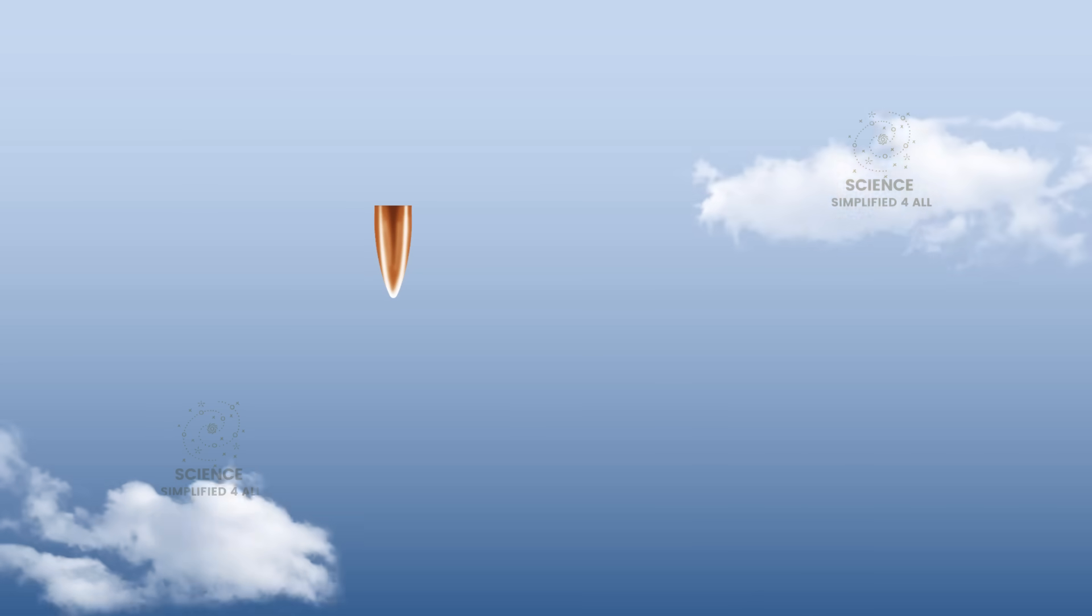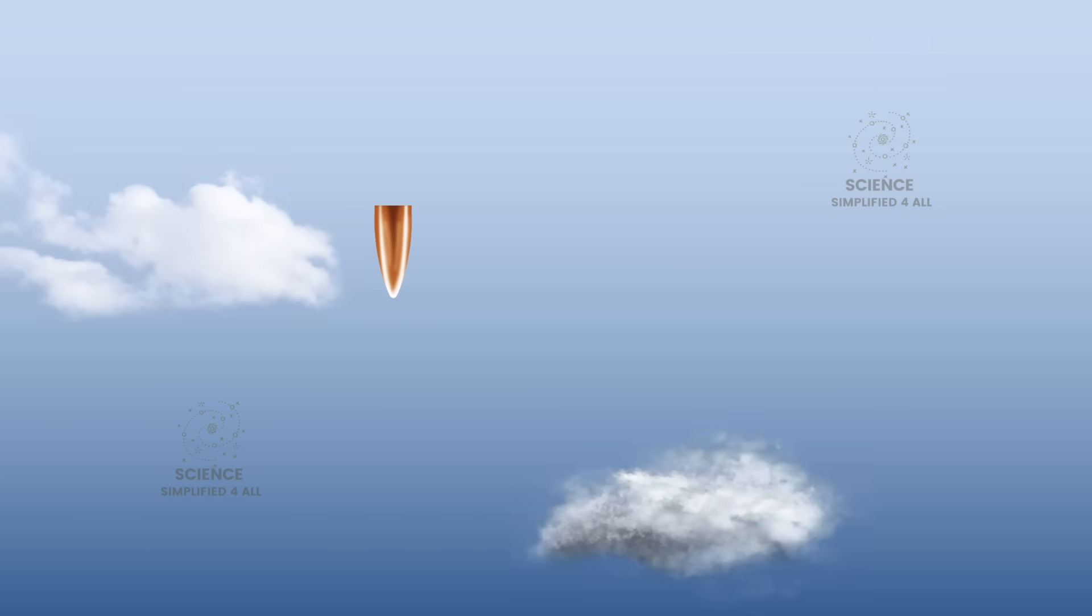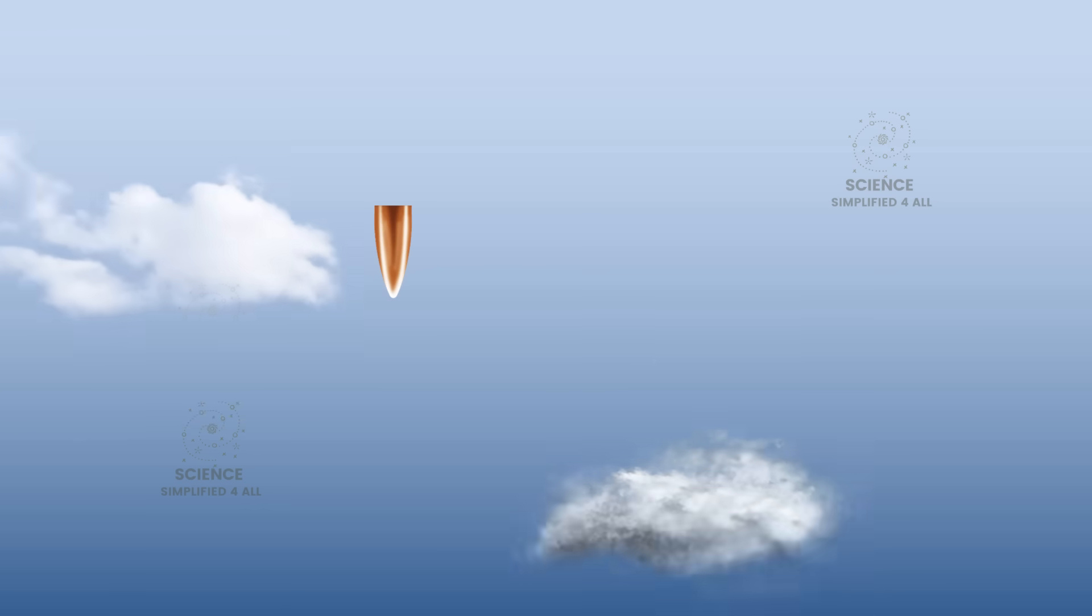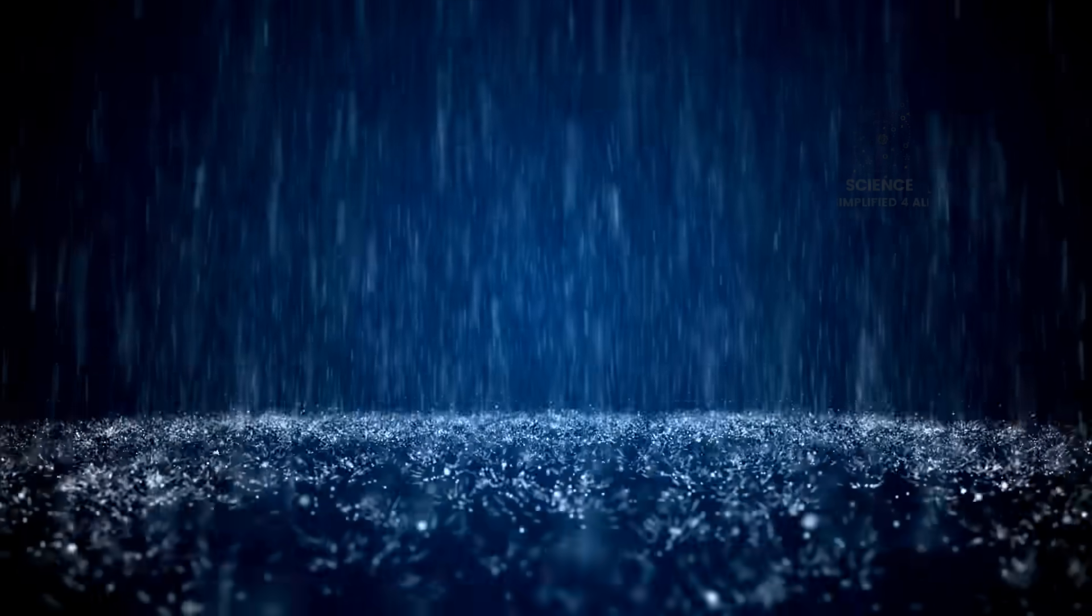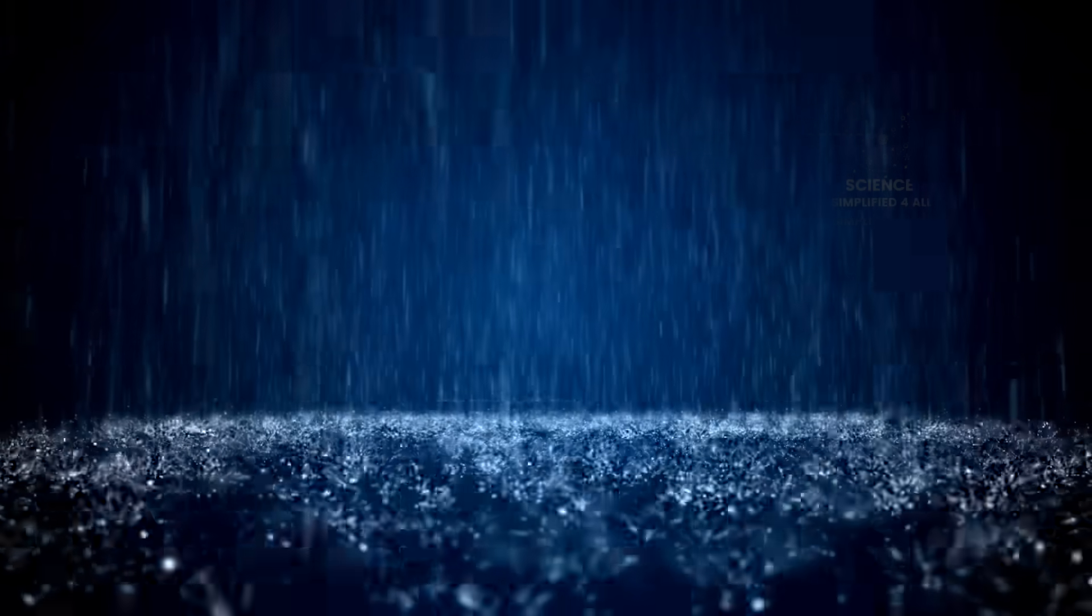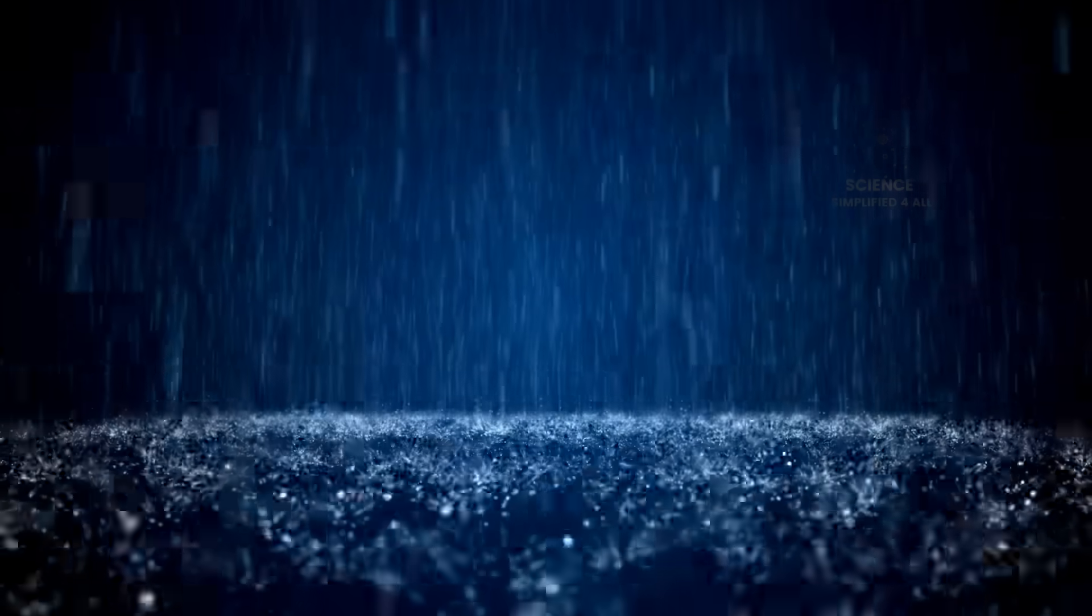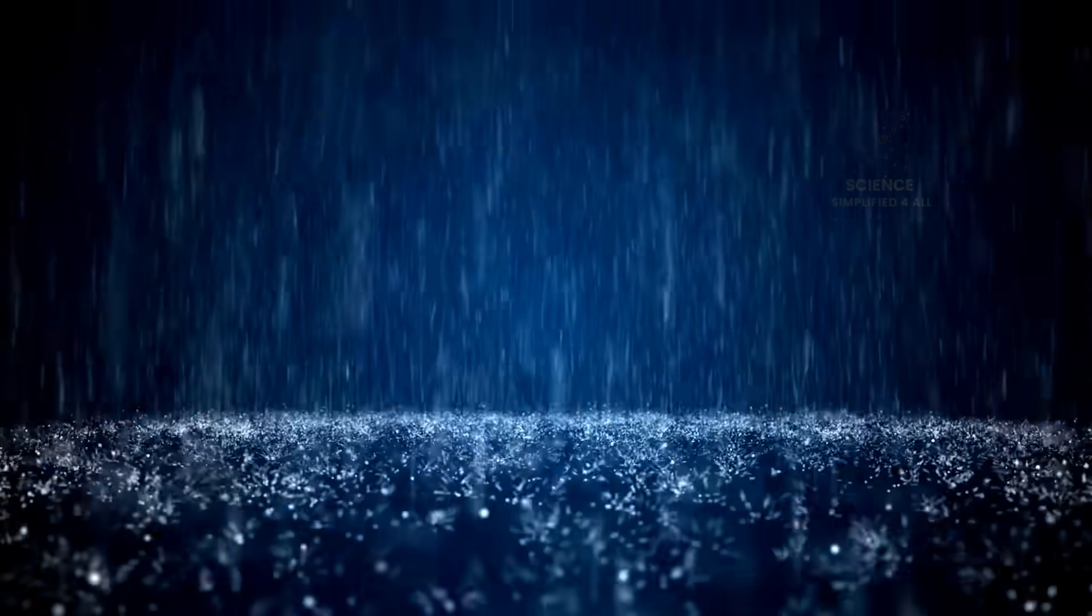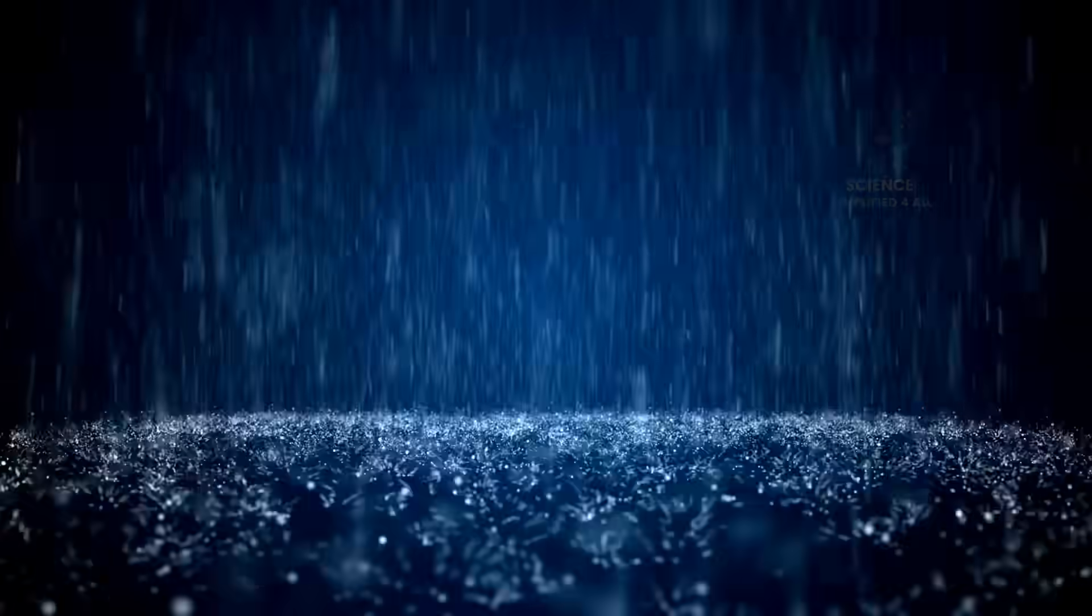So here is what we must understand. Any object falling through Earth's atmosphere will accelerate only up to a certain point. Once it reaches terminal velocity, it stops speeding up and continues falling at that constant speed. In a way, this is a blessing. If not for terminal velocity, a raindrop falling from high in the sky could easily reach a speed fast enough to cause serious injury. Or worse, that is the real beauty of terminal velocity.